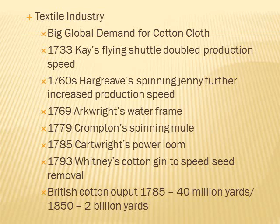The Industrial Revolution starts with the textile industry. There was a big global demand for cotton cloth. Key inventions include Kay's flying shuttle which doubled production, Hargreaves' spinning jenny which further increased production, Arkwright's water frame, Crompton's spinning mule, Cartwright's power loom, and Whitney's cotton gin to speed seed removal — all within about 67 years. British cotton output went from 40 million yards in 1785 to 2 billion yards in 1850.